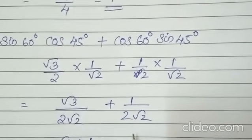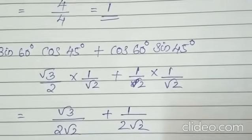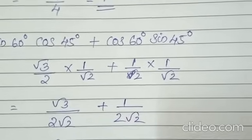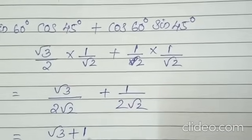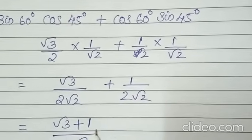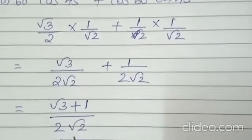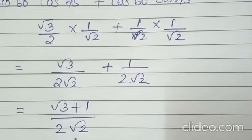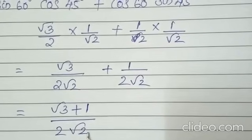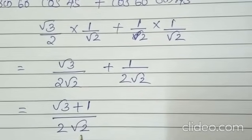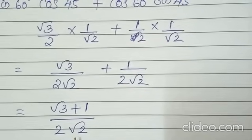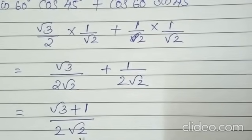Since the denominators are the same, we can add the numerators directly. The final answer is root 3 plus 1, divided by 2 root 2.